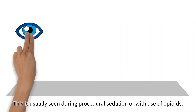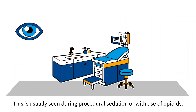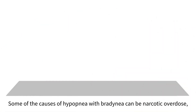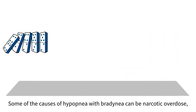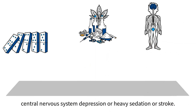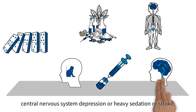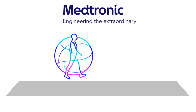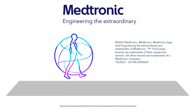This is usually seen during procedural sedation or with the use of opioids. Some of the causes of hypopnea with bradypnea can be narcotic overdose, central nervous system depression, heavy sedation, or stroke.